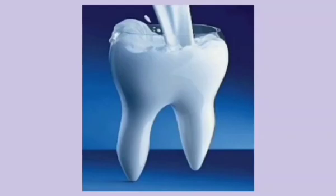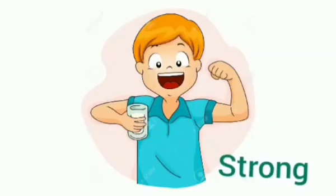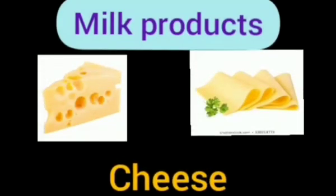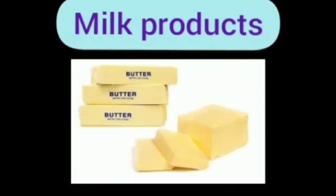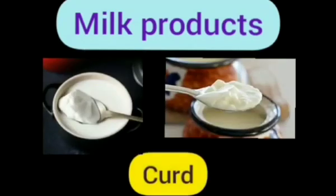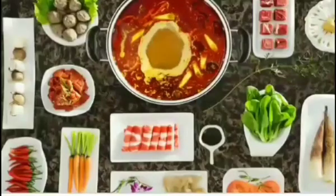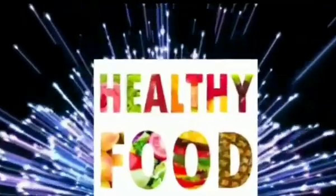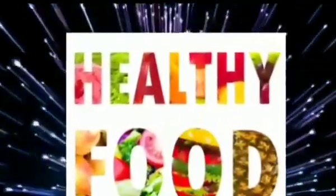From animals, we get milk, eggs, and meat. Milk makes our bones and teeth strong. From milk, we also get cheese, ghee, butter, and curd.